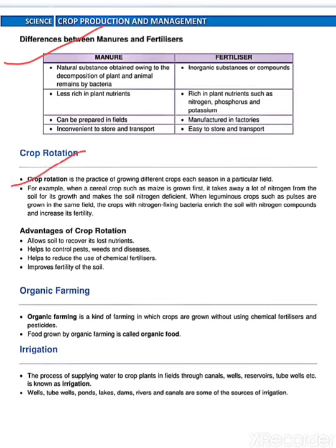Then after crop rotation. Crop rotation is the practice of growing different crops each season. Advantages of crop rotation: it allows soil to recover its lost nutrients, helps to control pests, weeds and disease, helps to reduce the use of chemical fertilizers, and improves the fertility of the soil.